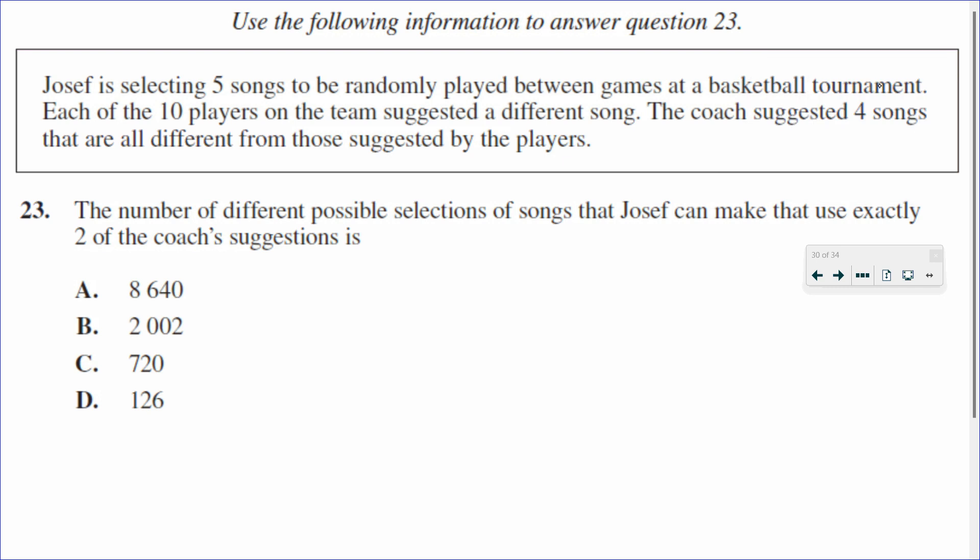In this question, Joseph is selecting five songs that are going to be played at a basketball tournament. Ten players on the team each suggest their own songs, and the coach suggests four songs. All of the songs are different from one another.